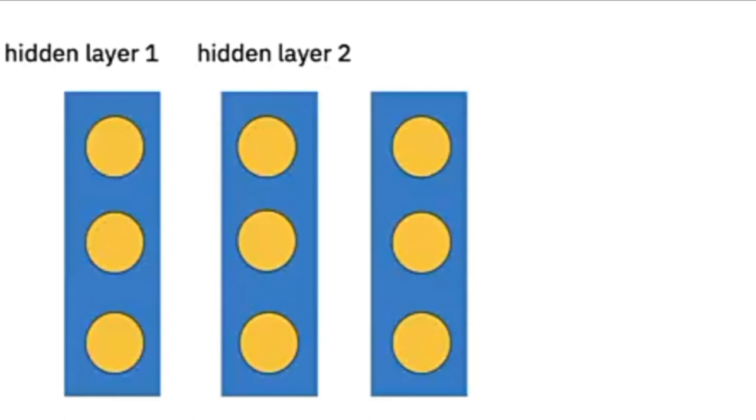We can add hidden layers. Here we have two hidden layers. If we have more than one hidden layer the neural network is called a deep neural network.